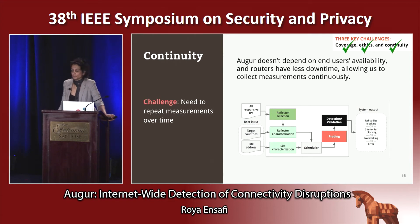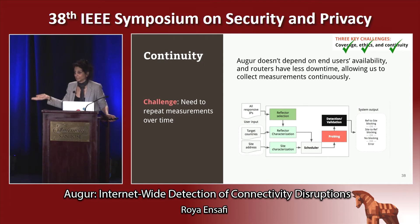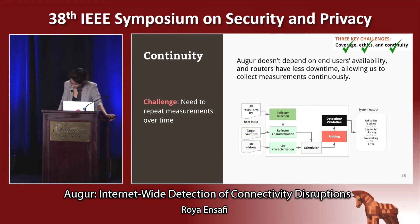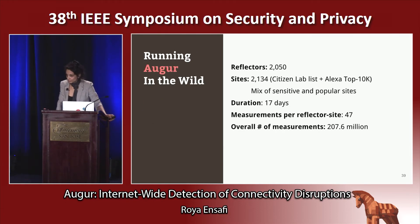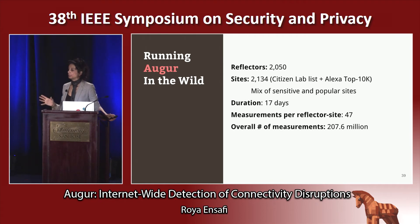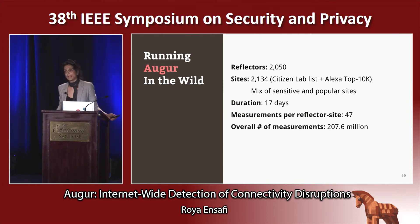How about continuity? Augur doesn't depend on volunteers' connectivity or on reliable Raspberry Pis, so we can run measurements continuously. To test the framework, we started by collecting 2,000 reflectors over 180 countries and selected 2,000 sites — half of which were sensitive with known instances of being blocked somewhere around the world, and the other half were popular websites. We let Augur run for 17 days.